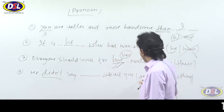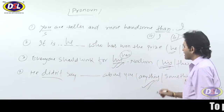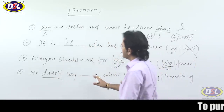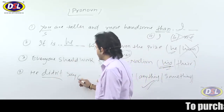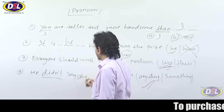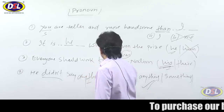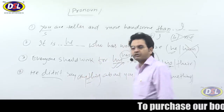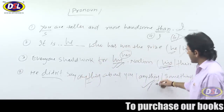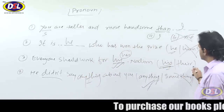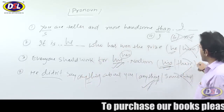He didn't say anything about you. 'Anything' is correct in a negative sentence; 'something' would be wrong here. For negative use 'any,' for positive use 'some' — this is the rule.